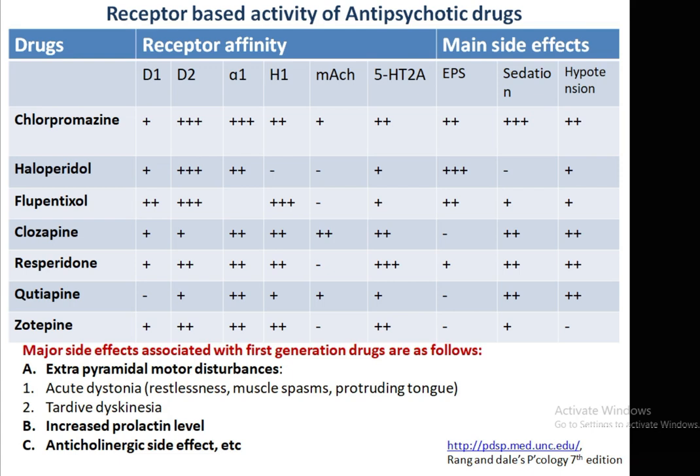Overall, the major side effect profile of first generation antipsychotic drugs includes extrapyramidal motor disturbances such as acute dystonias — restlessness, muscle spasms, and protruding of the tongue — as well as tardive dyskinesia, which is also considered an EPS. Other important side effects include increased prolactin levels and anticholinergic side effects. This concludes the overall receptor-based activity of antipsychotic drugs.